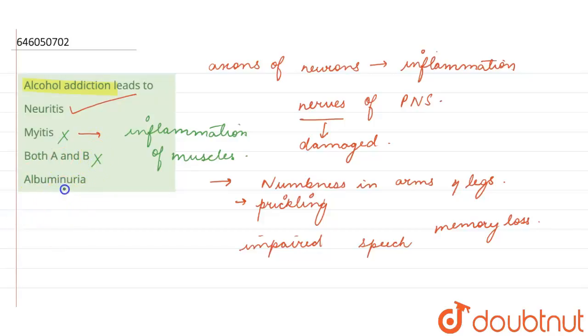Albuminuria is the excess deposition of albumin, which is a protein, in the urine. This is caused when there is damage to the kidney, so this is not related to alcohol addiction.